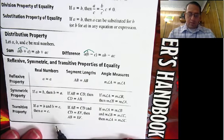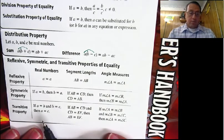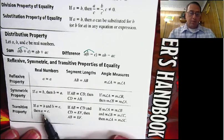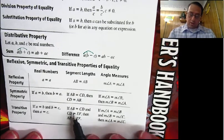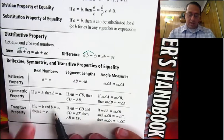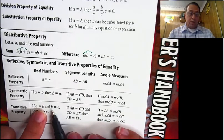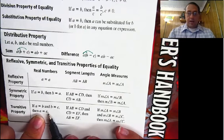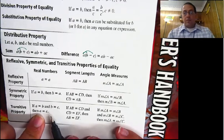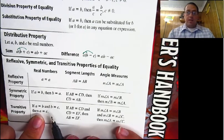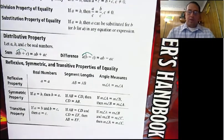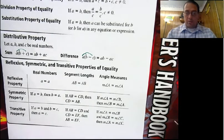Transitive property: if a equals b and b equals c, then a equals c. Same thing with segments. What this is saying is that if a and c are both equal to b, then they must equal each other. So if x equals 5 and y equals 5, then x and y equal each other. Not a big deal, and this one we use a lot.